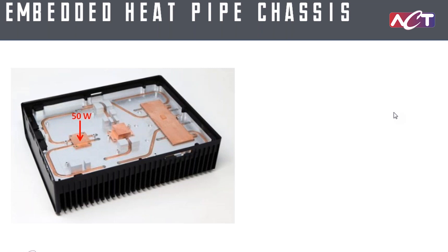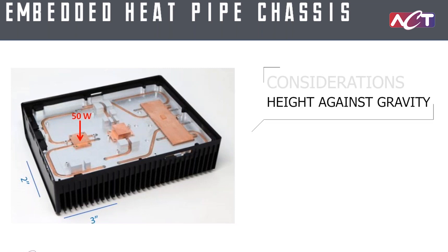We know the power from our system considerations. Next is understanding the geometry. We have a two inch section on the bottom side of the U, and three inches for each of the vertical sections, so the total length here is about eight inches.